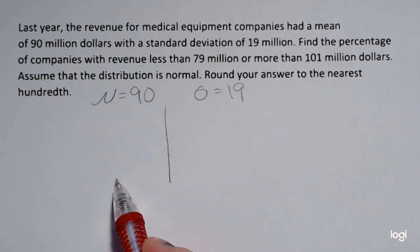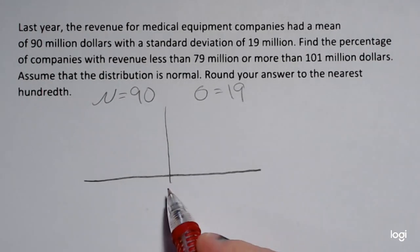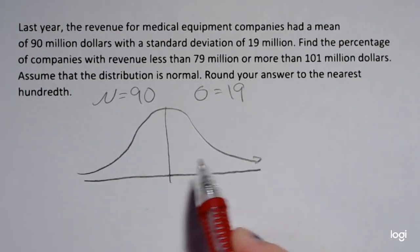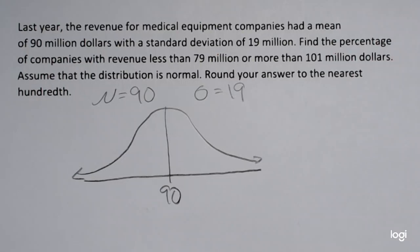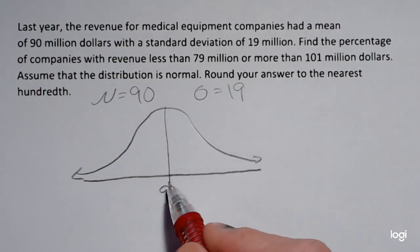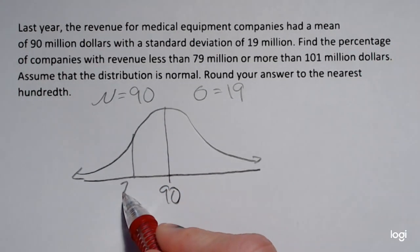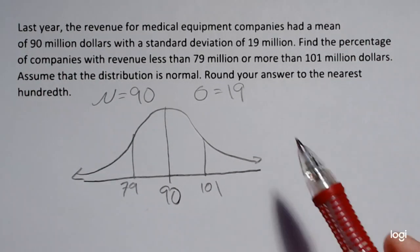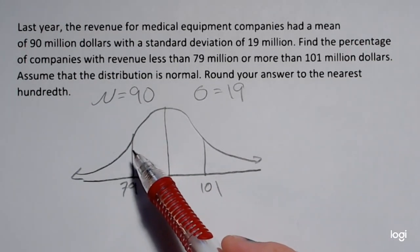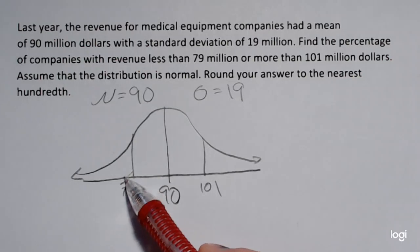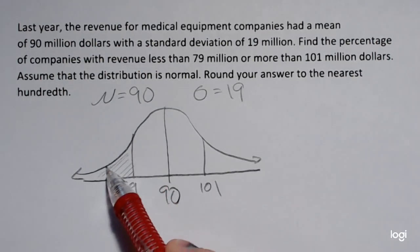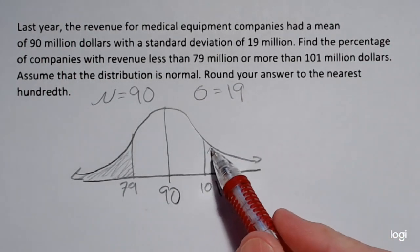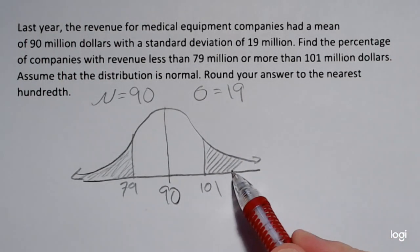To get an idea of what exactly I'm looking for, I'm going to draw a bell curve. I'm going to put $90 million in the middle because that's the mean. $79 million is below the mean, and $101 million is above the mean. I want the area or percentage that is less than $79 million — so less than, I'll be shading this left tail area. And then more than $101 million, I'm shading this upper area.